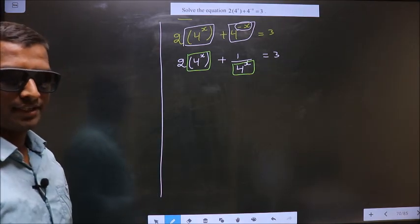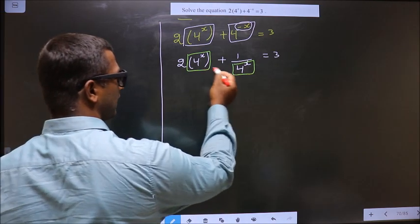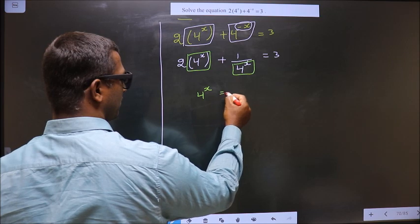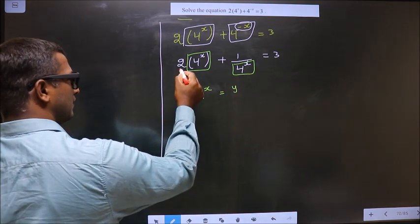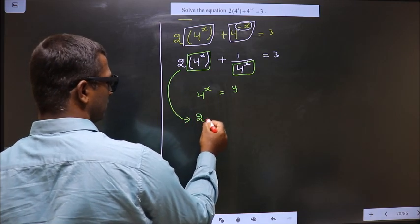Next, instead of writing 4^x every time, what you do is you take 4^x to be some other variable, let us say y. Now this equation will change to 2, in place of 4^x now it is y, plus 1 by, in place of 4^x, y equal to...